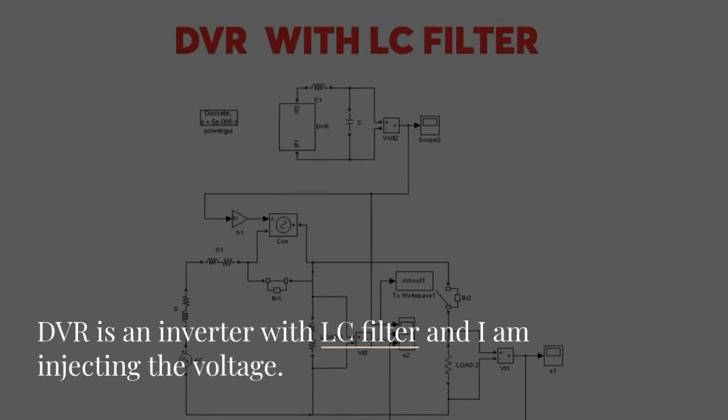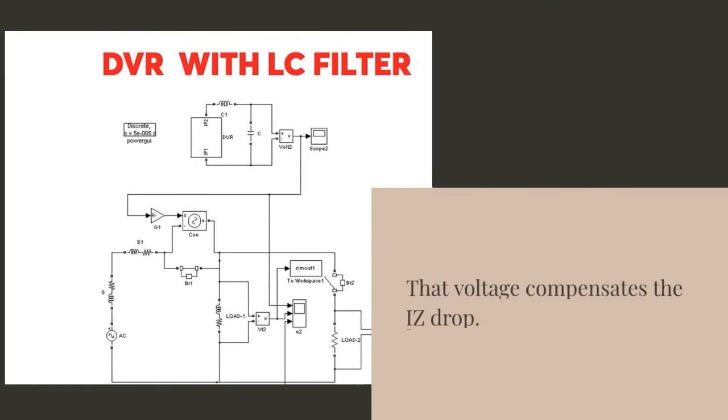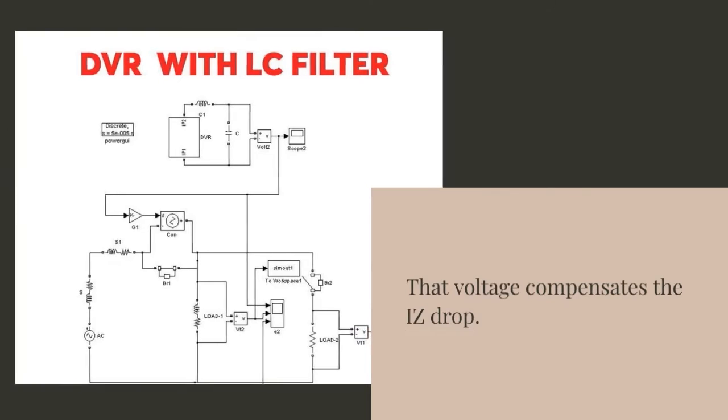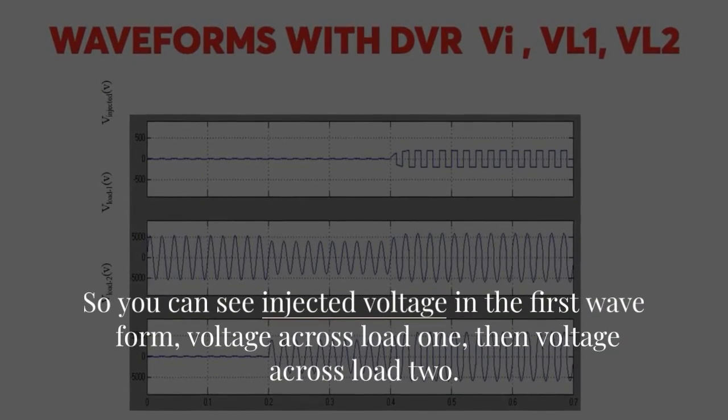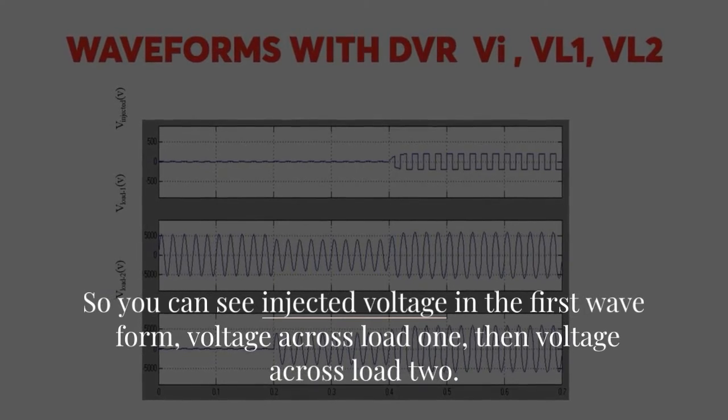Then with DVR I am injecting the voltage. DVR is an inverter with LC filter and I am injecting the voltage. That voltage compensates the IZ drop. So you can see injected voltage in the first waveform, voltage across load 1 then voltage across load 2.